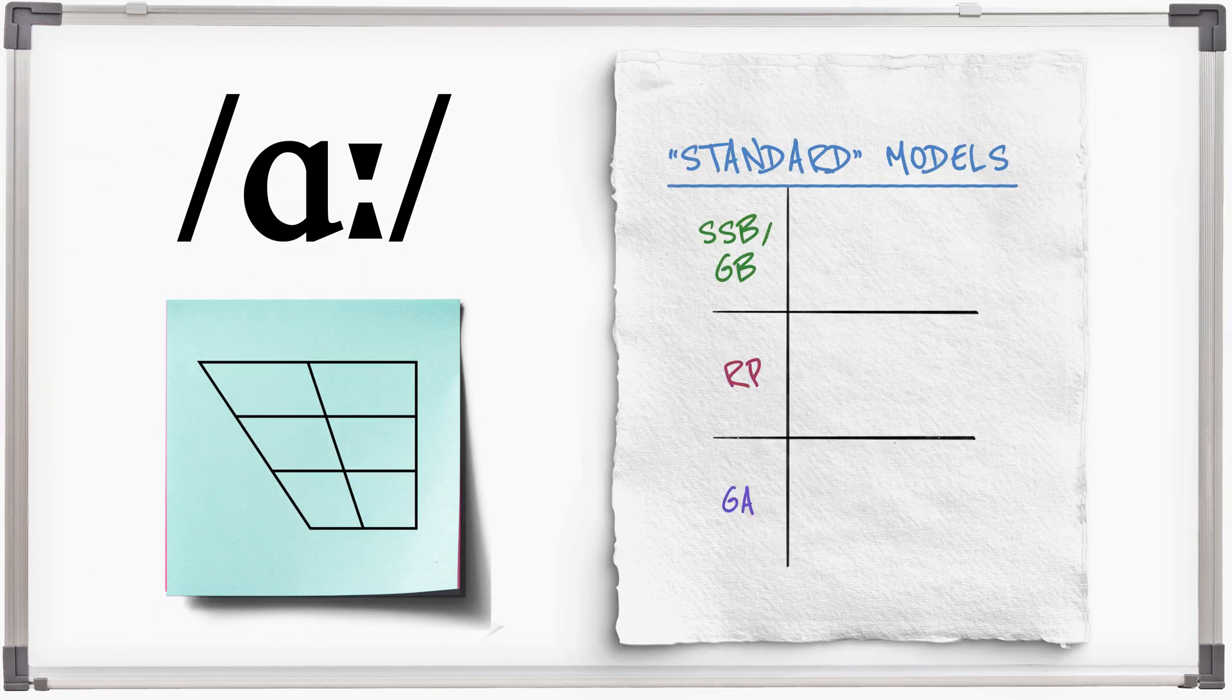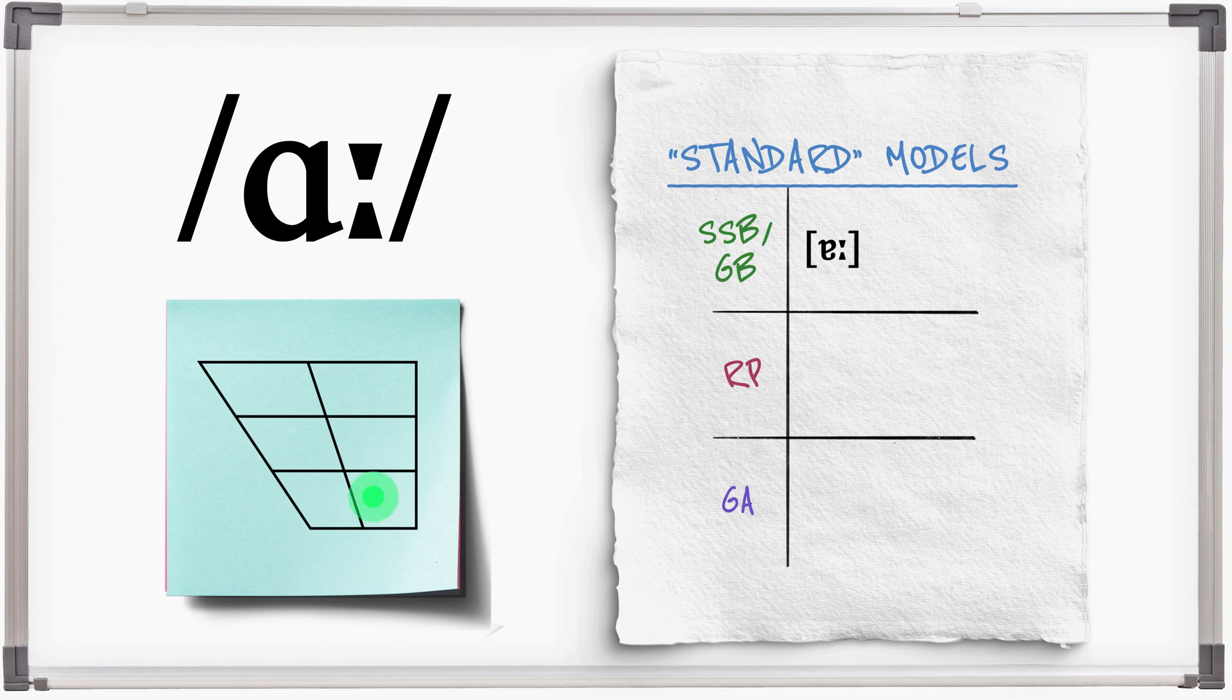Standard Southern and GB realise this sound in an open and fairly back position. Hard bargain. RP can be a tad more open and back. Hard bargain.